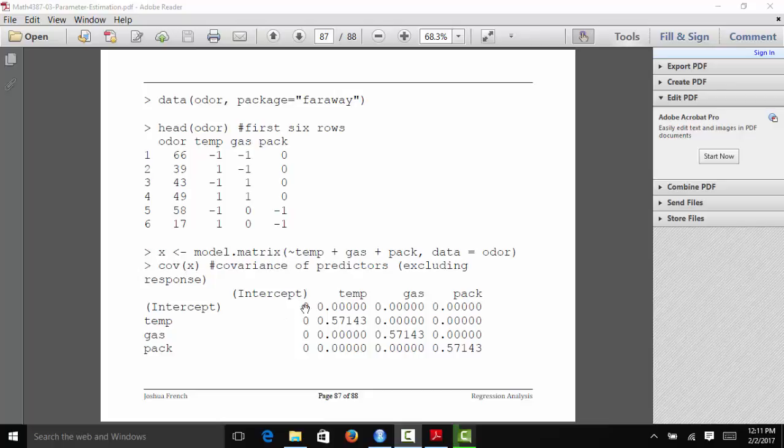If we look at the covariance between all of the regressors, we see that the covariance between the regressors is zero. And also the covariance between the intercept and the regressors is zero.